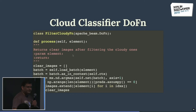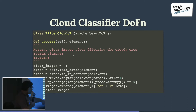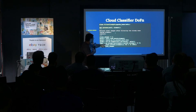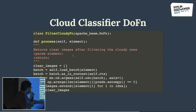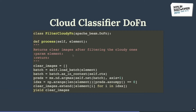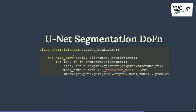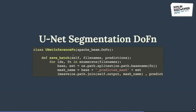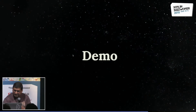For the cloud classifier DoFn, you load the ResNet model during initialization, then make predictions against the ResNet model and output a collection of clear images. For the segmentation step, you take the clear images — a collection of file names — create the mask image, and save that as your output.